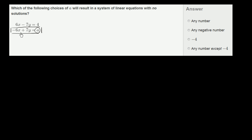It looks pretty close. If we multiply the left-hand side by negative 1, it's going to look just like the left-hand side of the first equation. So let's multiply both sides by negative 1. Negative 6x times negative 1 is positive 6x; 7y times negative 1 is minus 7y; and a times negative 1 is negative a. Now on the left-hand side, we have the same combination of x's and y's: 6x minus 7y.